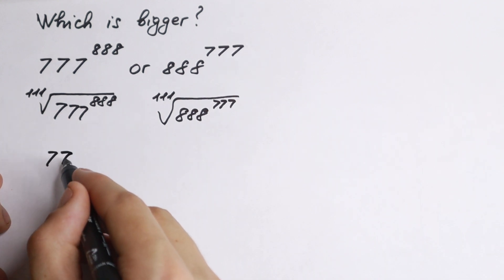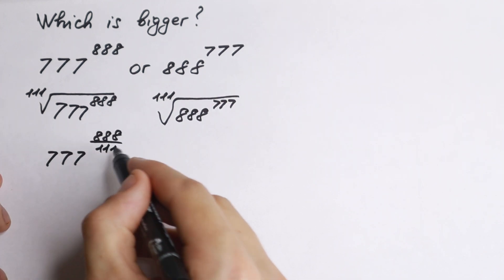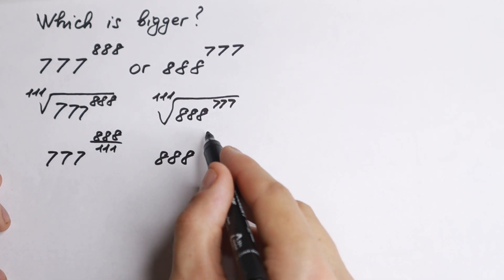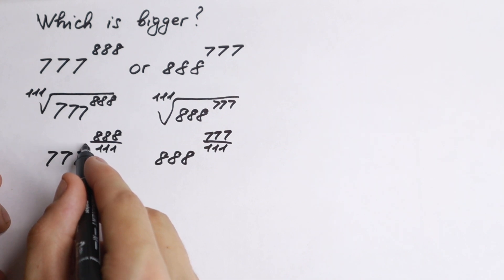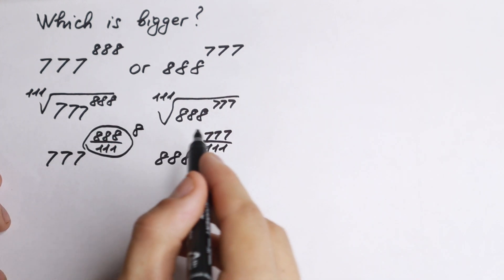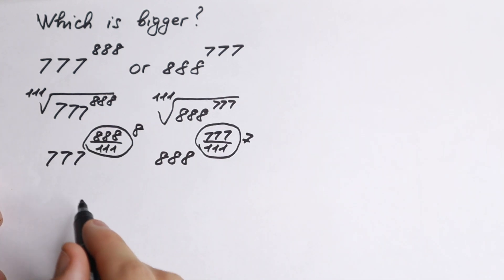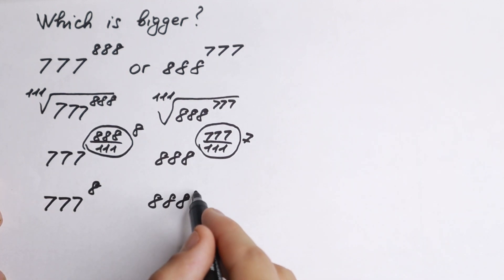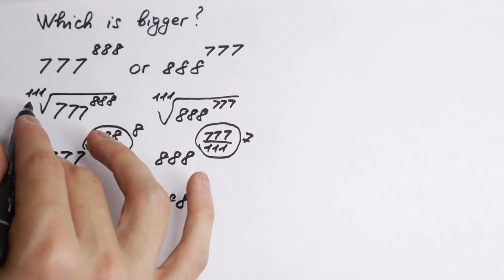So we will have 777 to the power 888 over 111, and on the right hand side 888 to the power 777 over 111. Since 888/111 = 8 and 777/111 = 7, after this step we are now comparing 777 to the power 8 versus 888 to the power 7. I hope you understand this step — we just rewrote using the 111th root.